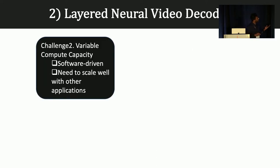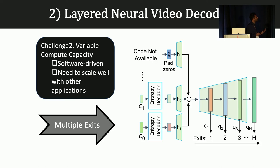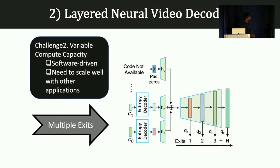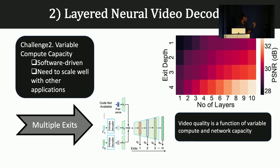Another challenge is that because these neural codecs run in software on GPUs or accelerators, they face contention with other applications, so we must ensure real-time decoding for real-time playback. To do that, we introduce multiple exits in the decoder to achieve different levels of quality requiring different levels of compute capacity — you can use a lower-quality decoding exit if you have less compute capacity. With this decoder, there is a trade-off between compute capacity and video quality: based on the number of layers downloaded and the exit depth used, you achieve a certain video quality.